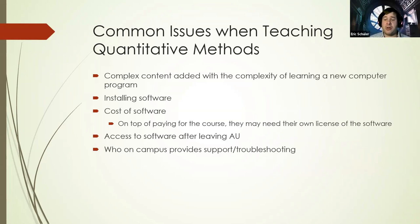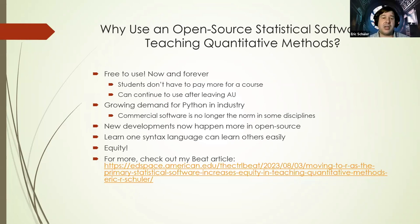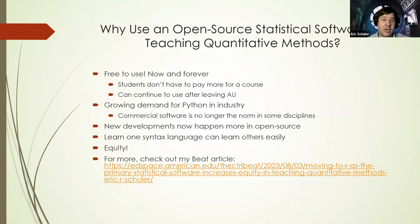I would be a proponent of open source. It's free to use now and forever, so students don't have to pay on top of the course. They can continue using it after leaving AU. And it's actually a growing demand — you see R and Python a lot in job applications and job postings.